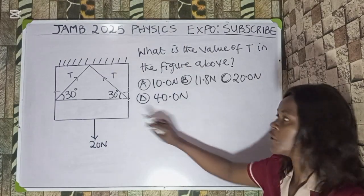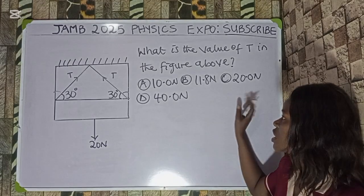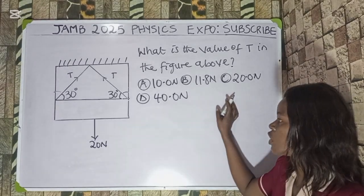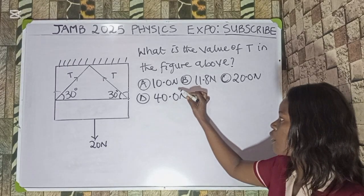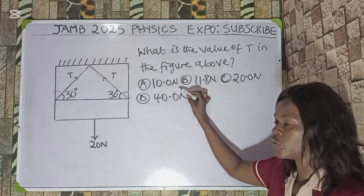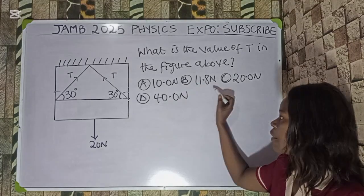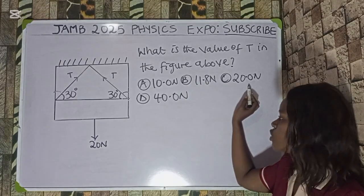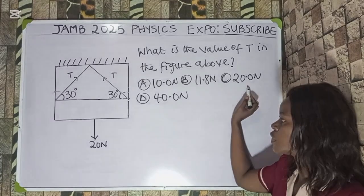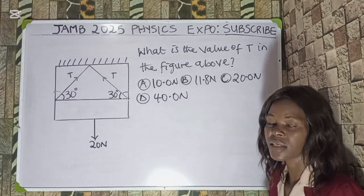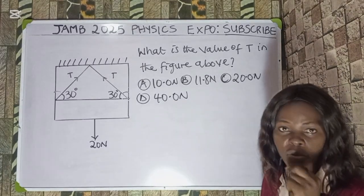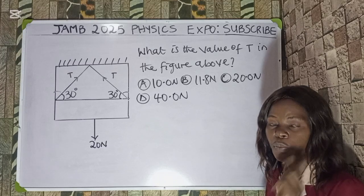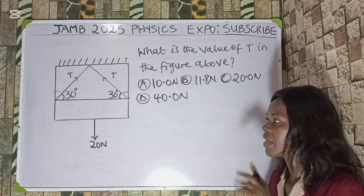With the diagram on the board, the question says: what is the value of T in the figure above? We have the following options — option A: 10.0 newton, option B: 11.8 newton, option C: 20.0 newton, option D: 40.0 newton. Before we solve this, the first thing that will come to your mind is the principle of triangle of forces.